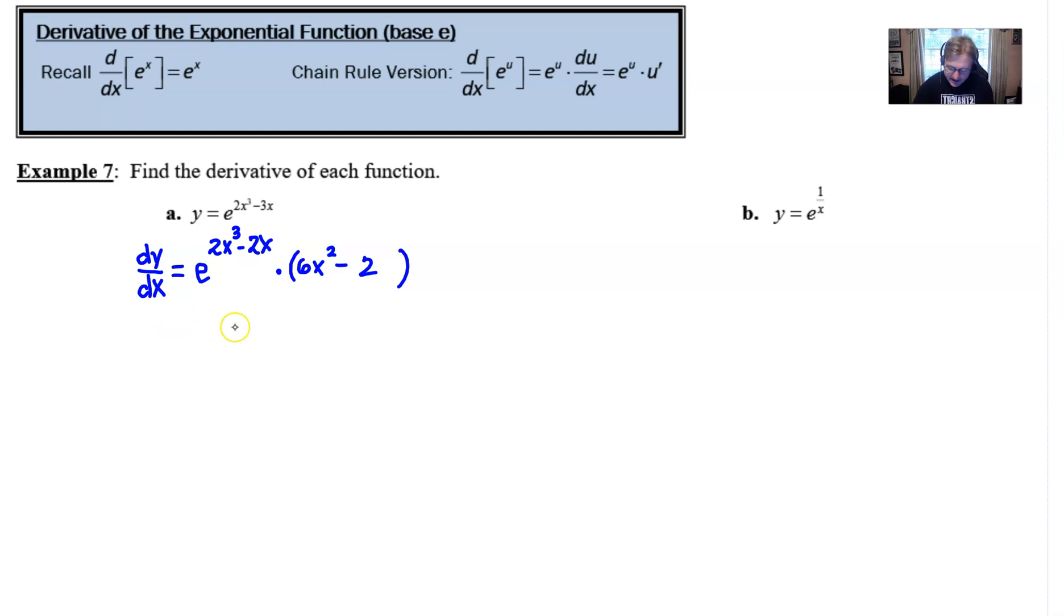Now, if you're wondering how could this possibly appear as a multiple choice? Well, there's a chance that perhaps a 2 could be factored out of that 6x squared minus 2, and it might come in first before the e. Sometimes we like to let that e with the power reside at the very end, so we don't question what's in the exponent and what's not in the exponent. All right. But of course, the first answer would be perfectly acceptable in any free response.